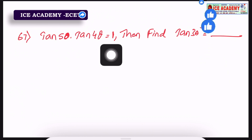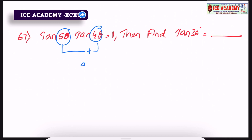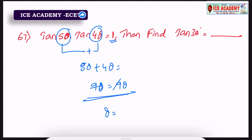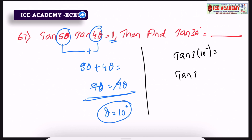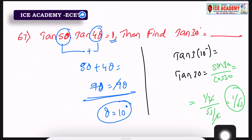Tan 5θ into tan 4θ is equal to 1. Find tan 3θ. The answer is 1. Here is the concept: if we add the value to 90 degrees — if we add the values such that they sum to 90 degrees, their product equals 1. So if the theta value is 10 degrees, then 5θ is 50 degrees and 4θ is 40 degrees, which add to 90. For example, sin 30 by cos 30: sin 30 value is 1/2, cos 30 value is √3/2. The 2 cancels, giving 1/√3. So if you take the theta value, you add to 90 degrees.